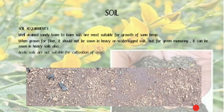Soil: Well-drained sandy loam to loam soils are most suitable for the growth of sunhemp. When grown for fiber, it should not be sown in heavy or waterlogged soils, but for green manuring, it can be sown in heavy soils also. Acidic soils are not suitable for the cultivation of the crop.